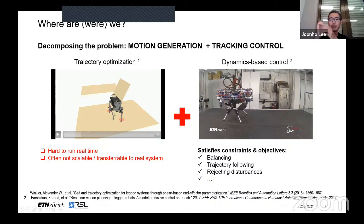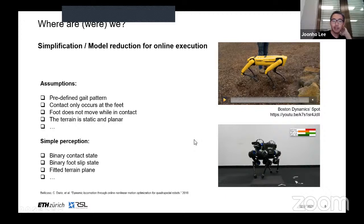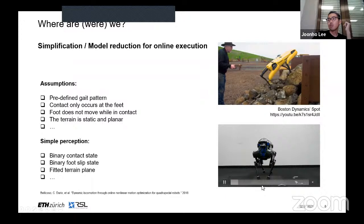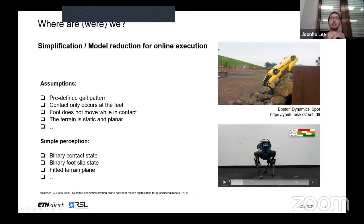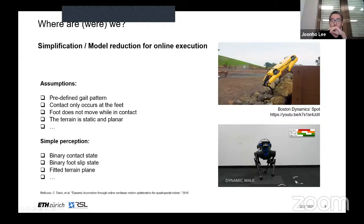People usually simplify this problem to improve convergence and computation time, but this often makes the solution infeasible on the real robot. What people do is simplify the problem. If you see the famous Spot from ANYmal, they make really regular walking patterns because people already handcrafted this pattern. There are several assumptions — contact only occurs at the feet, the plane is static and rigid, and the controllers only perceive the world in a very simple representation like binary contact state and some approximation of the terrain. This simplified problem can be efficiently solved and generalizes well.